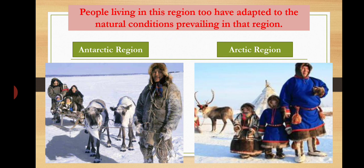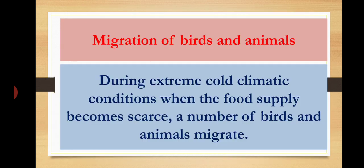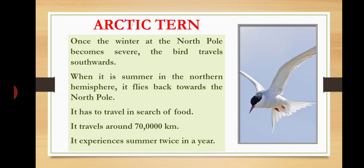Pictures of the Antarctic and Arctic regions are shown. Let us know about migration of birds and animals — during extreme cold climatic conditions, when food supply becomes scarce, a number of birds and animals migrate. The Arctic tern: once winter at the north pole becomes severe, the bird travels southward. When it is summer in the northern hemisphere, it flies back towards the north pole, traveling around 70,000 km. It experiences summer twice in a year.